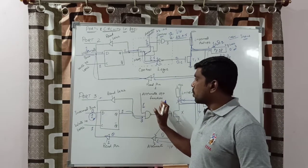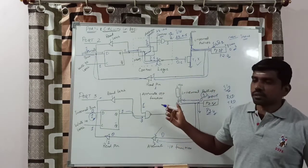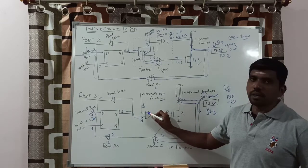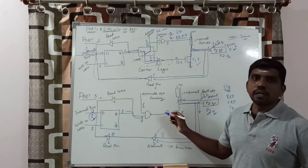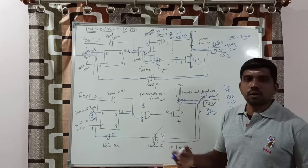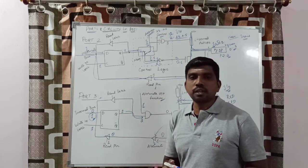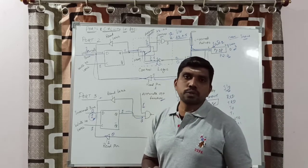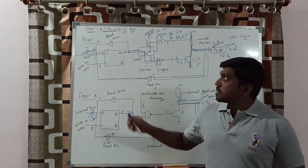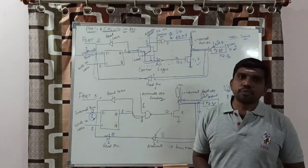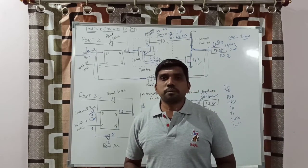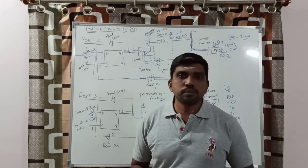Suppose this port acts as an alternate function. You can choose the function based on the alternate function input — you can receive data, transmit data, or choose timer 0, timer 1, or interrupt functions. That is the basic function of port 2 and port 3. Thanks for watching my channel. Please subscribe. Thank you.